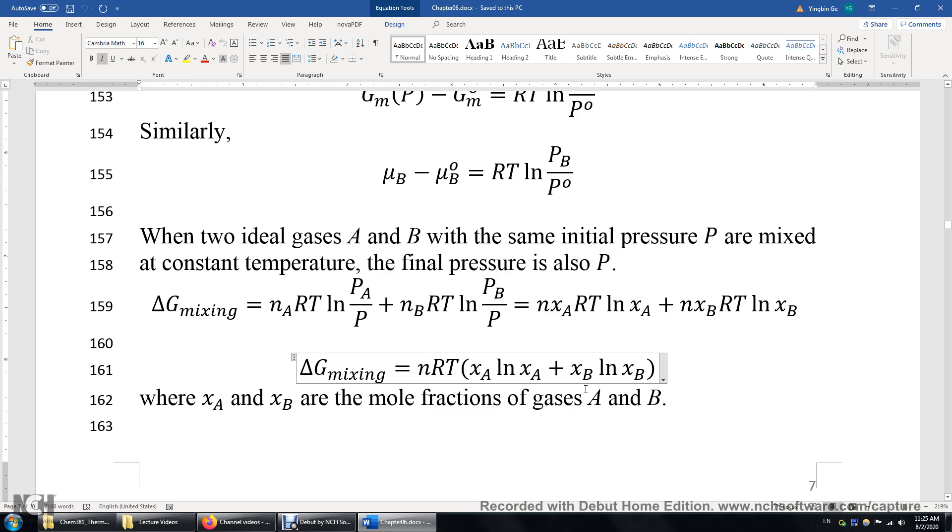What if you have three ideal gases being mixed? Well, it's very simple. If you have three ideal gases being mixed, you just need to add one more term. That's XC times ln XC in this sum. Remember, XA plus XB plus XC is 1 when you mix three ideal gases.